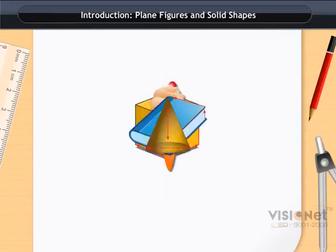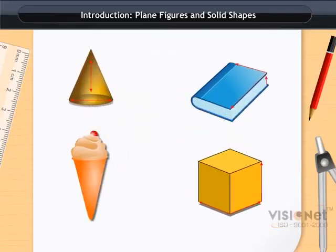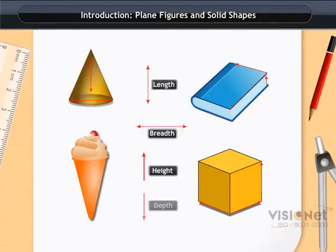One thing in common about most of these objects is that they have all the same length, breadth, and height or depth. That is, they all occupy space and have three dimensions. Hence, they are called three-dimensional shapes.